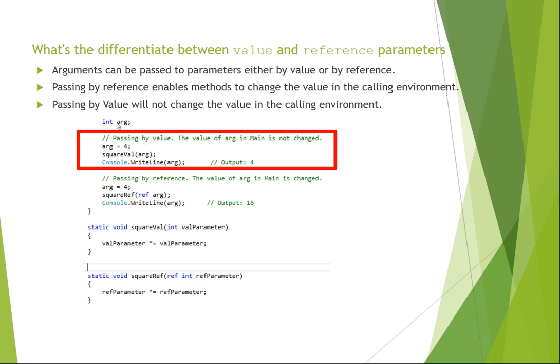In this example here, we declared a simple ARG as a variable integer, called it four, and then we ran a method here called square the value for four. So then we're going to pass that down into our program right here called square the value.